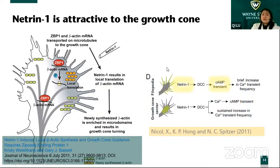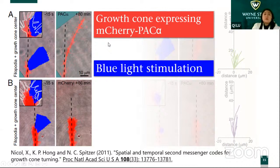In this study, they basically shone a laser PAC on the growth cone. It was labeled and linked with mCherry, which shows red — so the growth cone will be red. The PAC stimulation light is blue light.